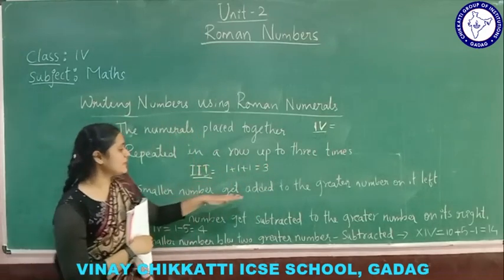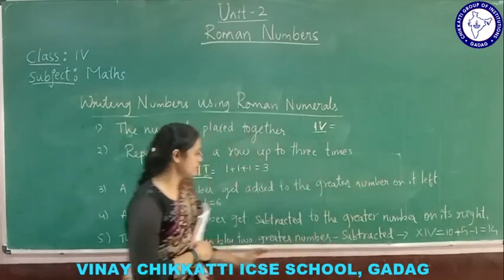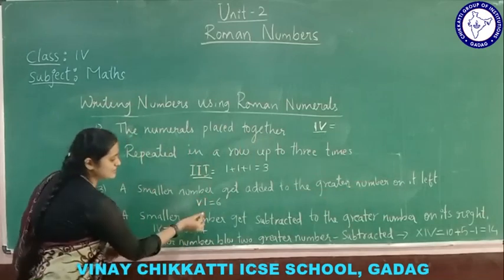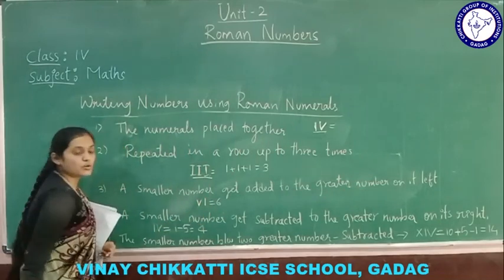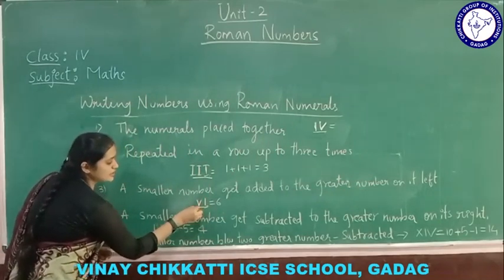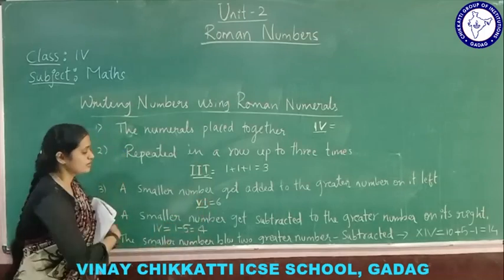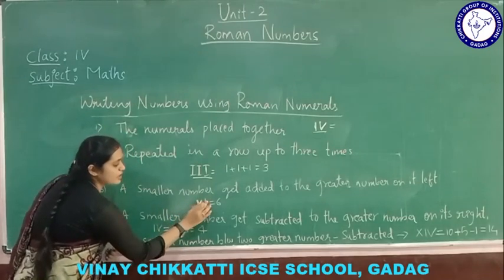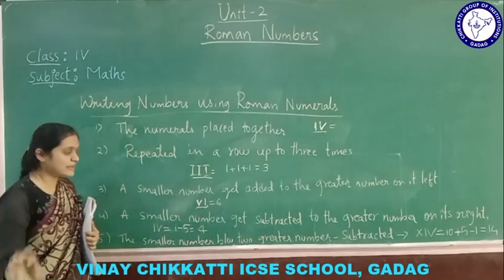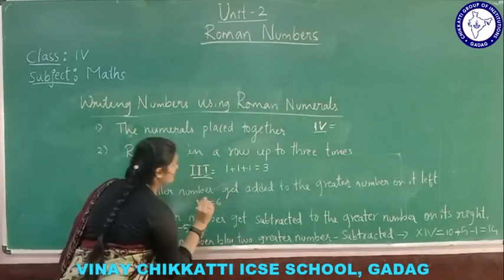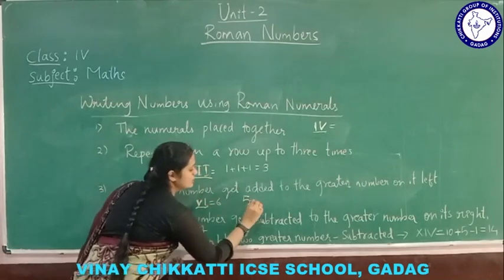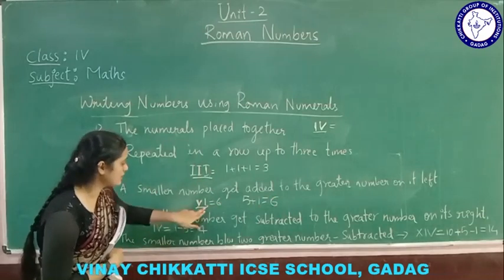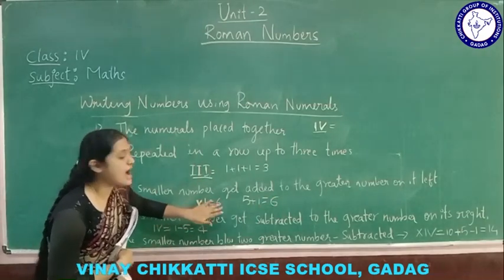The smaller number gets added to the greater number on its left. For example, V and I — V is 5 and I is 1. Since I comes after the greater number V, you have to add: 5 plus 1 gives result 6. Whenever the smaller number comes after the greater number, you have to add these numbers.